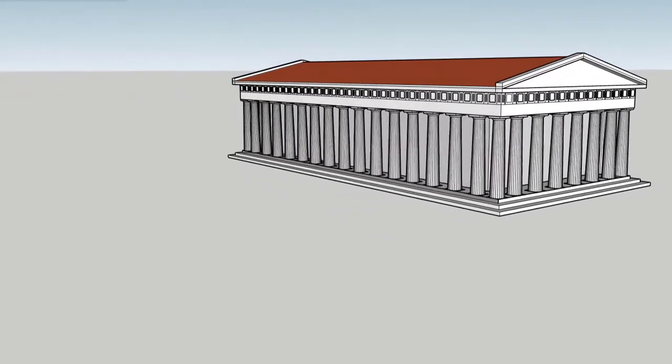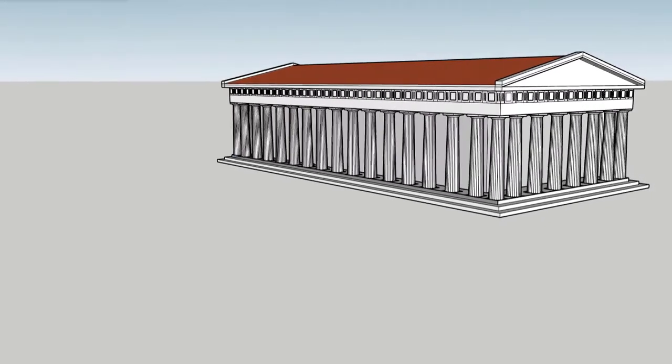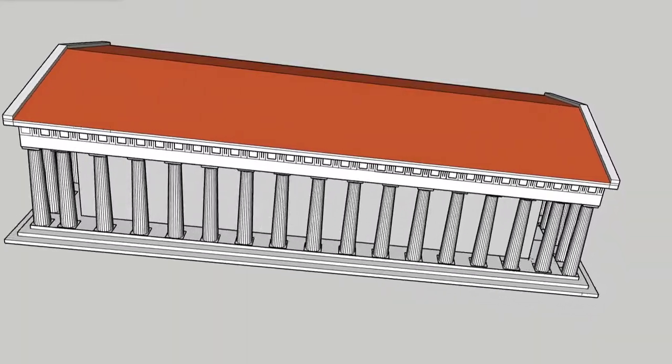The pediment is, of course, an isosceles triangle. The slope angle of the pediment of the Parthenon corresponds to that of a particular Pythagorean triangle.